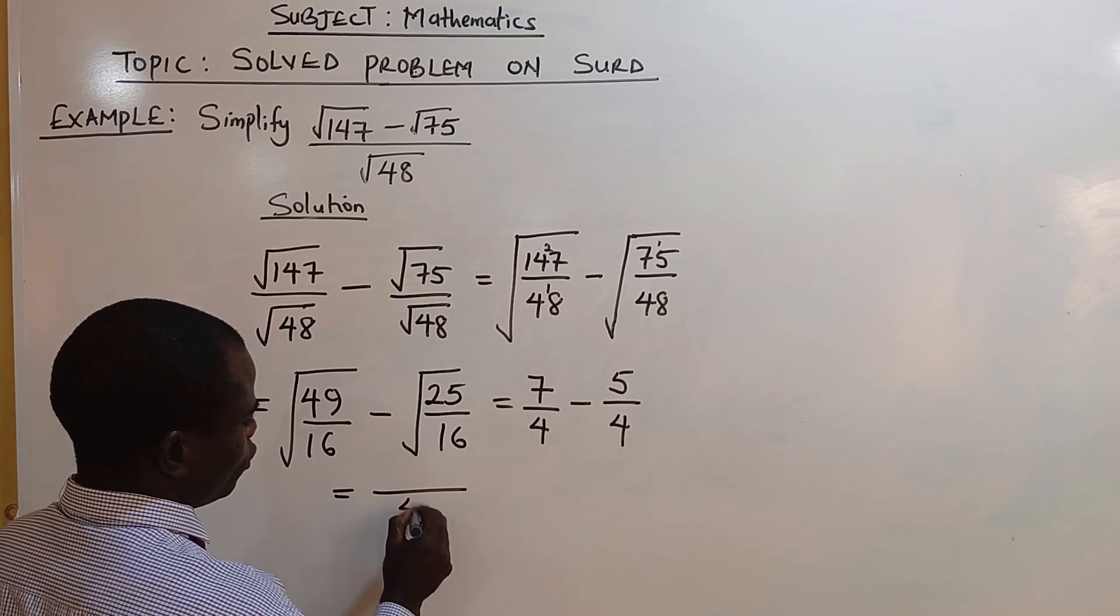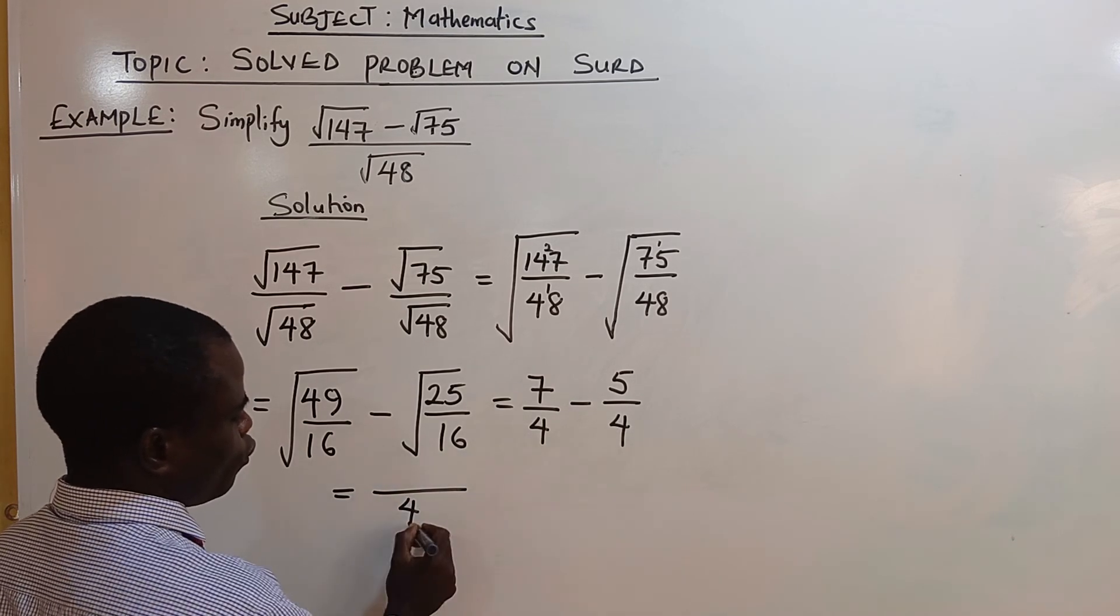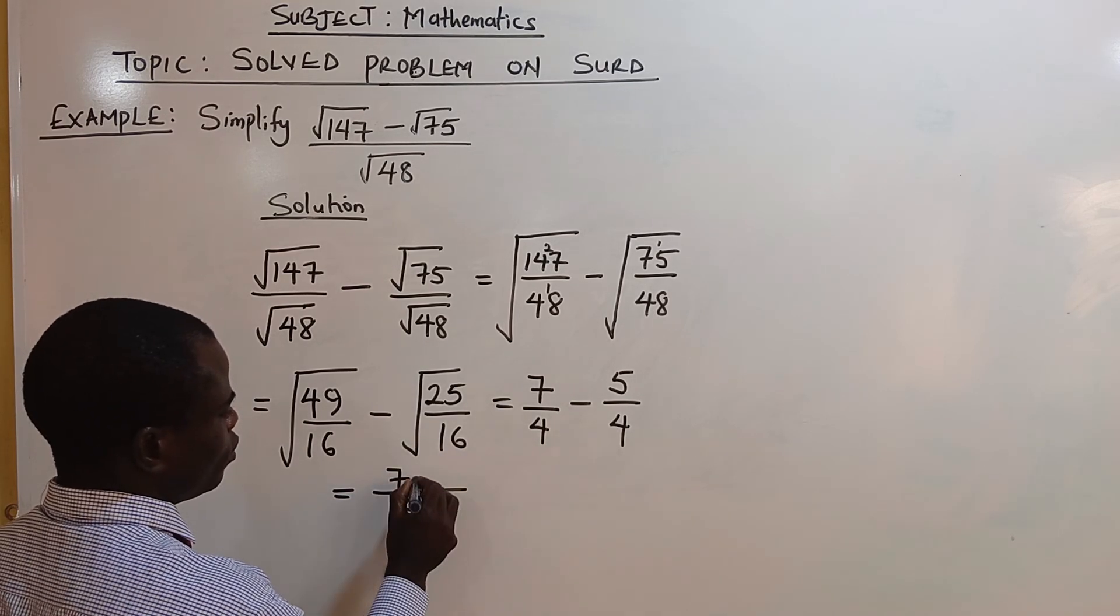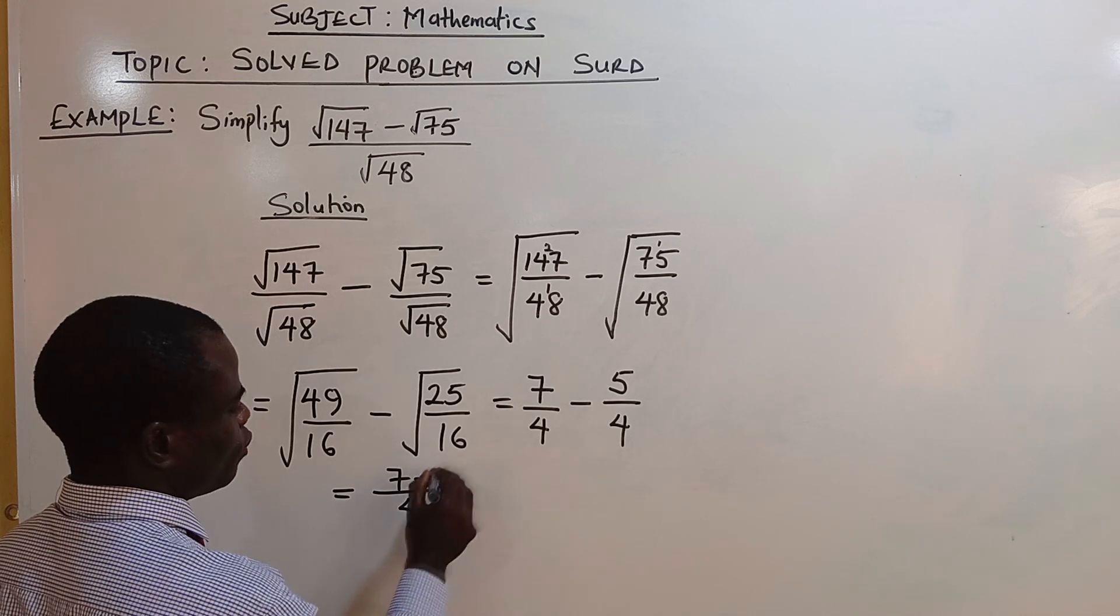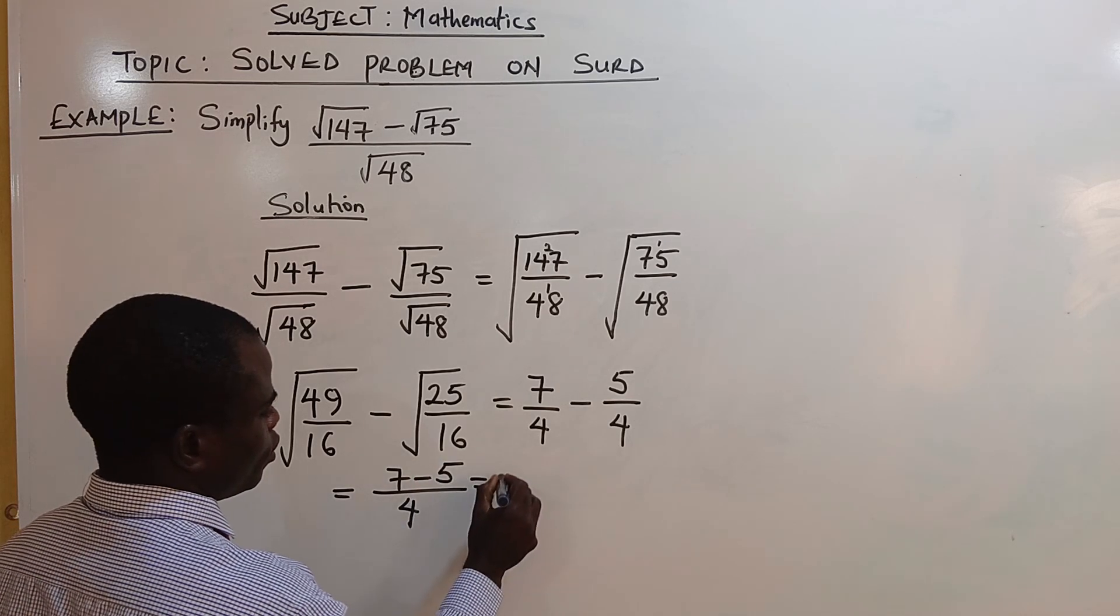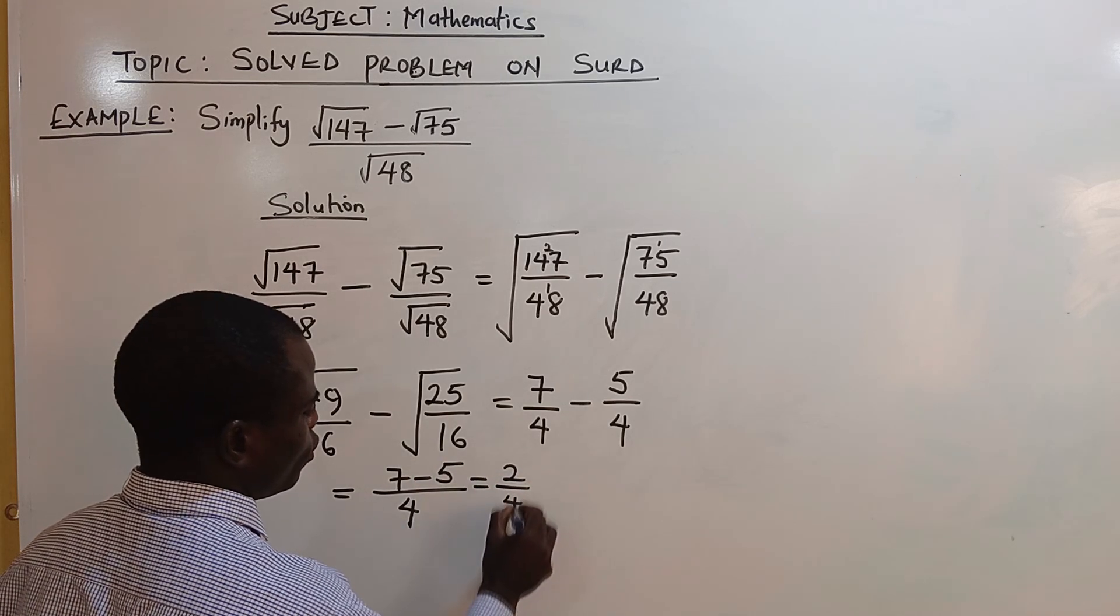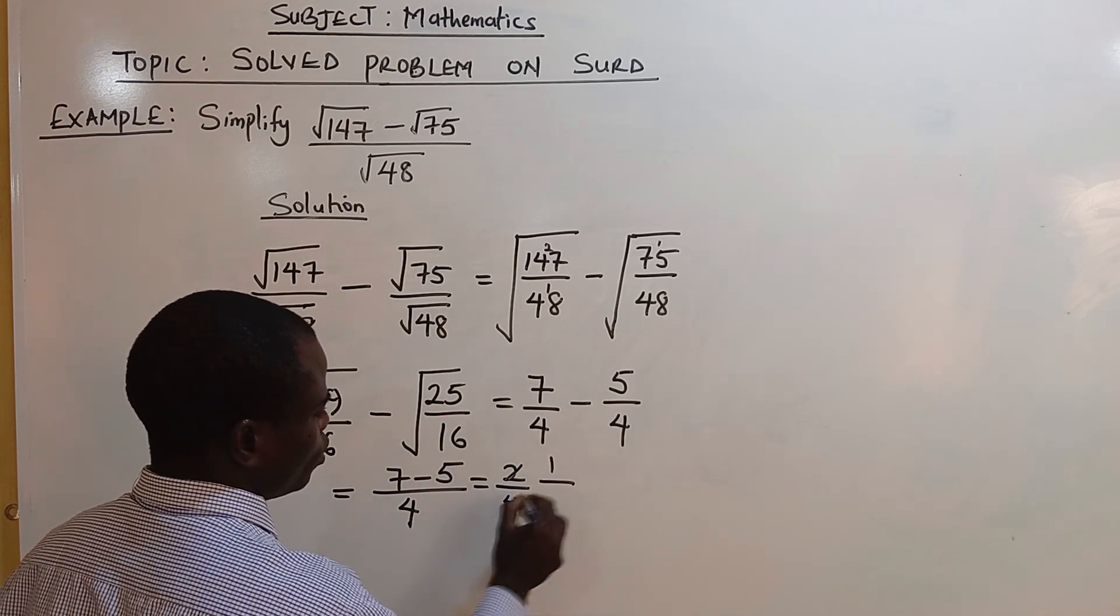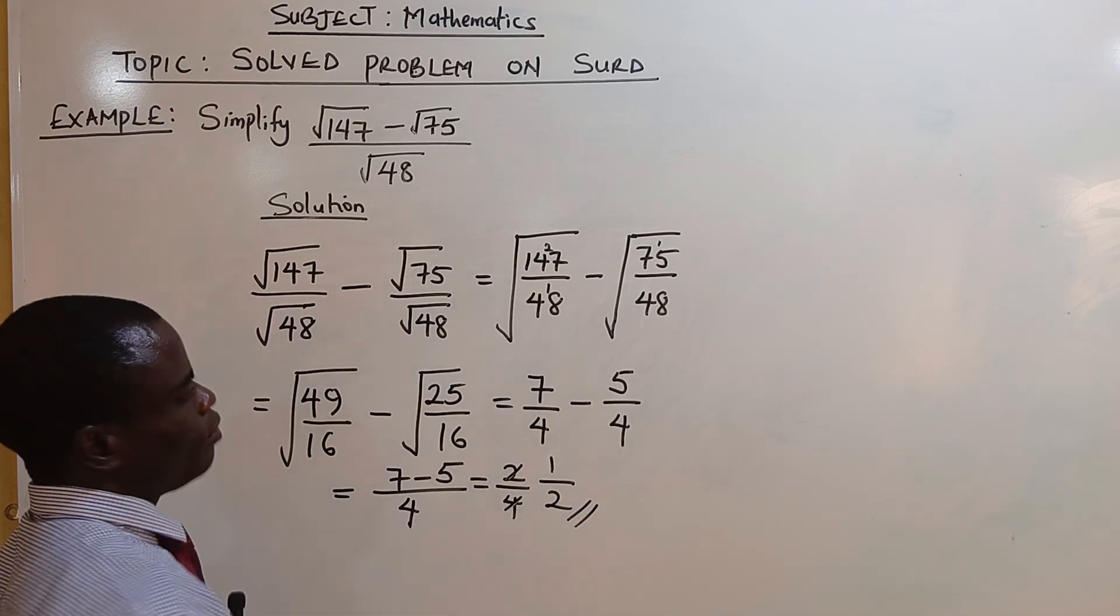The LCM is 4. 4 goes into 4, 1; 1 times 7 is 7. Minus: 4 goes into 4, 1; 1 times 5 is 5, which is 2 over 4. 2 here is 1, 2 here 2. The answer is one-half.